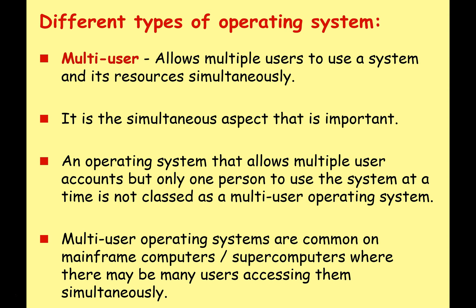Another way of categorizing operating systems is the idea of a multi-user OS. This allows multiple users to use a system and its resources simultaneously — and it is the simultaneous aspect that is important. We're not referring to an OS that allows one person to use it, then log off and the next person logs on. We're talking about systems like mainframes or supercomputers where lots of people are using the same computer resources simultaneously.